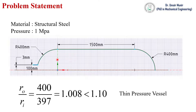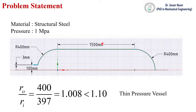This is the geometric information of the pressure vessel that will be used to create the geometry. The outer radius of the pressure vessel is 400 mm, the wall thickness is 3 mm, and the opening diameter is 100 mm. The length is not important — we can choose any length. The ratio of outer radius to inner radius is less than 1.10, so this is a thin wall pressure vessel.